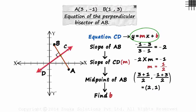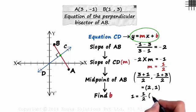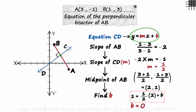And it is also one of the points on CD. So we can substitute these values in place of X and Y. Substituting the values of M, X and Y here, we get 1 equals half times 2 plus B. Solving this, we get the value of B as 0.